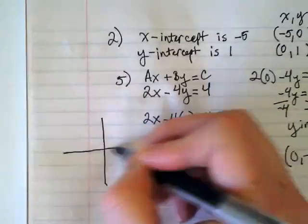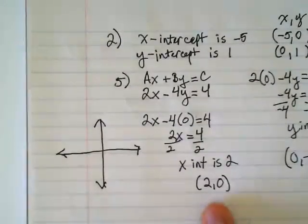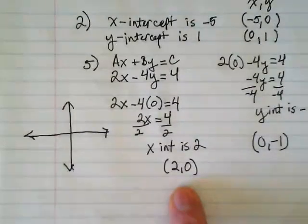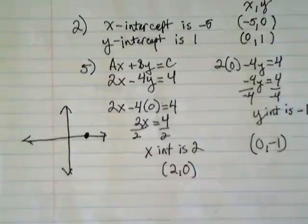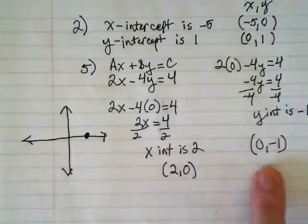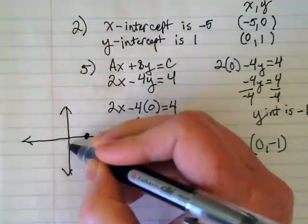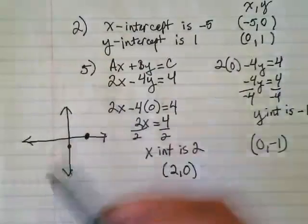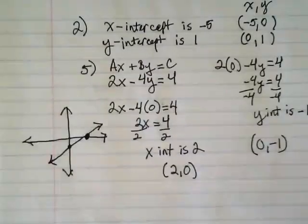Just make a real quick graph over here. 2, 0 would be about here. And on the same graph, 0, negative 1 would be about here. Can I draw that line? You only need 2 points on a graph to make the line. If you have the x and y-intercept, you can graph the line.